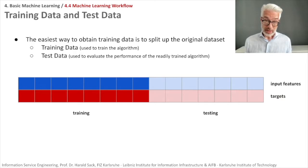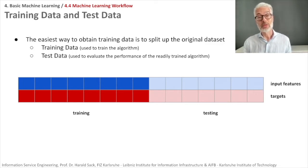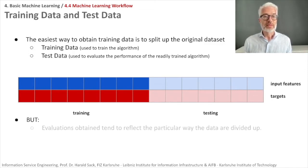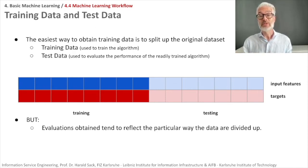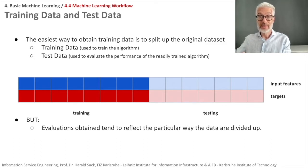We know now that we have to split our data into training data and test data. The training data is used to train the algorithm and the test data is used to evaluate the performance of the already trained model. One problem is that the evaluations obtained tend to reflect the particular way you divided your data, so it is not necessarily wise to simply take the first n data items for training and the subsequent ones as test data.